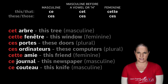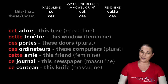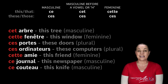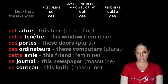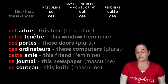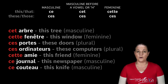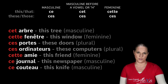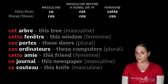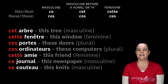Fenêtre — this window. Fenêtre is feminine, so cette fenêtre, C-E-T-T-E, is the right demonstrative adjective. Portes has an S, so it's plural: ces portes, meaning these doors. Ordinateurs also has an S — it's computers — so we say ces ordinateurs, meaning these computers.